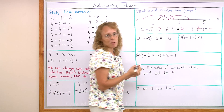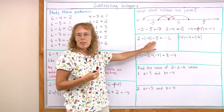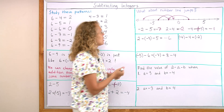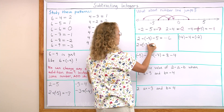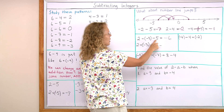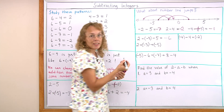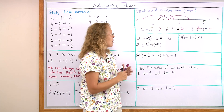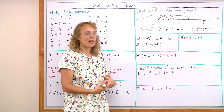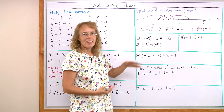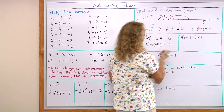I'll show you another way to do it too — change any subtraction in here into an addition. So our problem would change to 2 plus negative 3 plus, and the opposite of 5 is negative 5. In other words, we are adding negatives. Then once you have this, add all the negatives together — that's negative 8 — and then you have 2 plus negative 8, which is of course the same: negative 6.